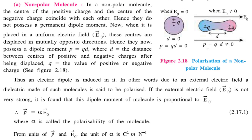In a non-polar molecule, the center of the positive charge and the center of negative charge coincide with each other. So they do not possess a permanent dipole moment. When such a molecule is placed in a uniform electric field E₀, the centers are displaced in mutually opposite directions — positive charge goes one way, negative charge the other.